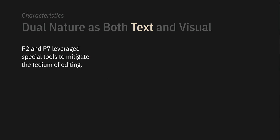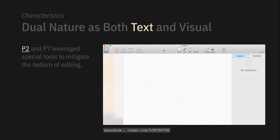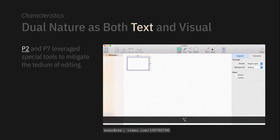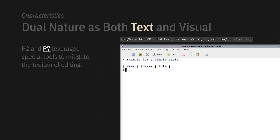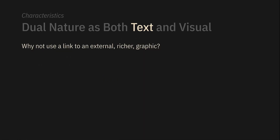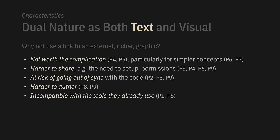To get around the tedium, two participants used special tools. P2 used Monodraw, a diagram editor specifically for ASCII, and to them it was 'the best $10 I could ever spend.' P7 used Org Mode for Emacs for structured editing of tables. We also asked why they didn't link to an external image or richer graphic like in a Google Doc. Participants did not find it worth the hassle — it makes sharing harder and risks going out of sync because you have to maintain two separate living things. Richer graphics can also sometimes be harder to author and are incompatible with the tools already in use.